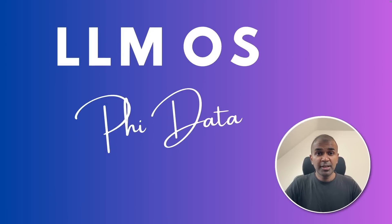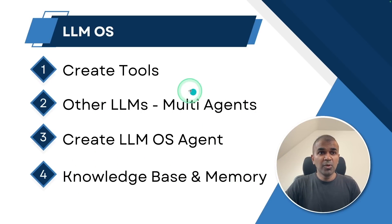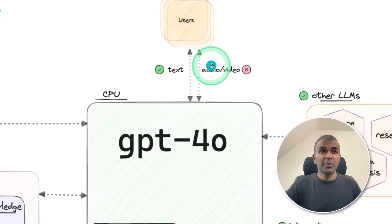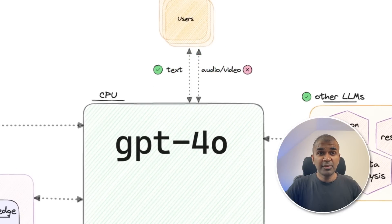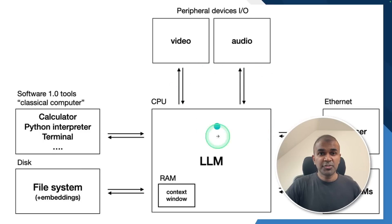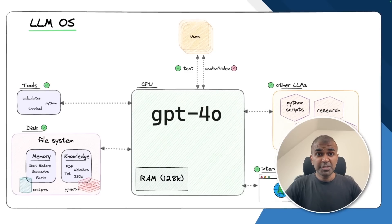Everyone, I'm really excited to show you about LLM OS using PhiData. In this, we are going to create tools, create multi-agents, create the LLM OS agent, and finally the knowledge base and memory. These components are all from the image we saw earlier. The only difference is that we are going to give text as input, because currently we only have access to the text API. As soon as we get access to the audio/video input API for GPT-4O, we will be able to exactly replicate what Andre Karpathy proposed. I'm going to take you through step by step on how to build this from scratch and also set up your user interface.